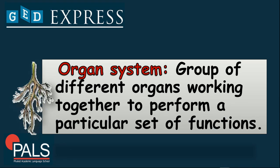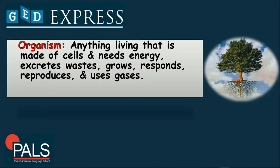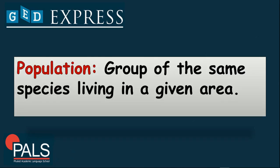An organ system performs some particular set of functions on different living species. If you're going to group all those organ systems, that will make up an organism. An organism is defined as anything living that is made of cells and needs energy, excretes waste, grows, responds, reproduces, and uses gases.